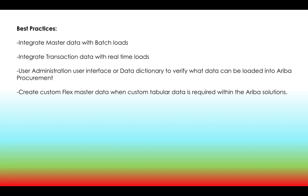What are the best practices when implementing Cloud Integration Gateway? Always integrate master data with batch loads because master data is not very volatile and does not change regularly, so you don't need it in real time. You can use batch loads daily or every hour depending on how often master data changes. For transaction data, use real-time processing because whenever a purchase order is created, it should be sent immediately to the supplier.